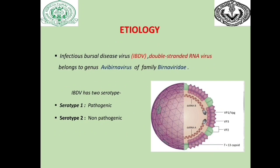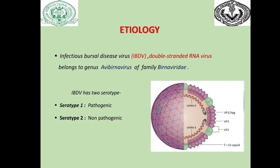Etiology: IBD is caused by the infectious bursal disease virus, a double-stranded RNA virus belonging to the genus Avibirnavirus under the family Birnaviridae. This virus is very stable and persists in the environment for several weeks. It can survive at pH from 2 to 12. IBDV has two serotypes: serotype 1 and serotype 2. Serotype 1 strains are pathogenic in chickens.